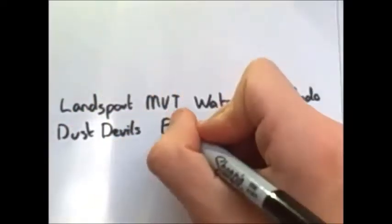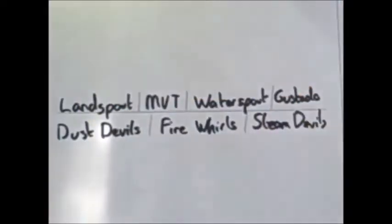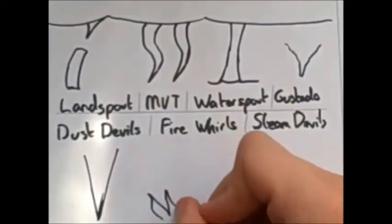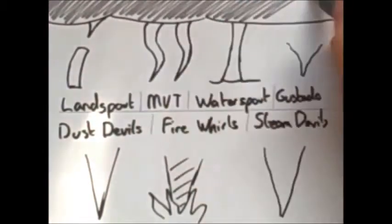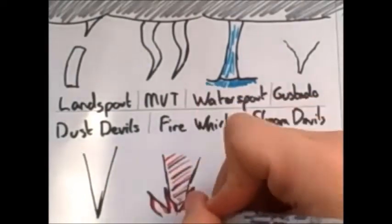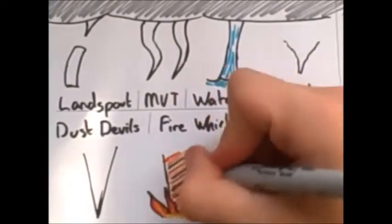There are various types of tornadoes that include land spouts, multiple vortex tornadoes, water spouts, gustnadoes, dust devils, fire whirls, and steam devils, although some of these are disputed to whether they are actual tornadoes.